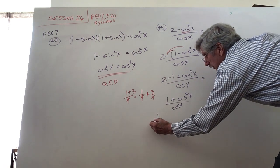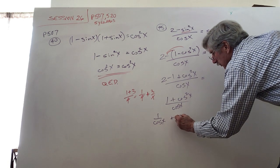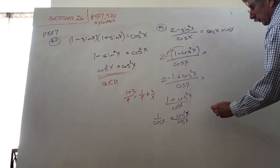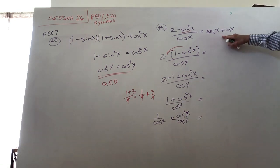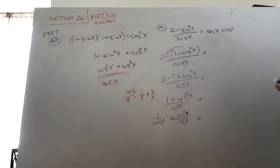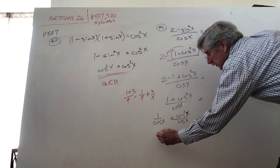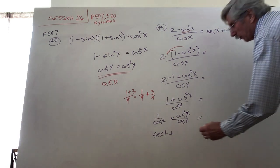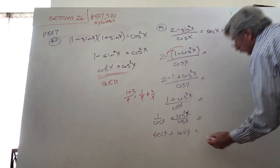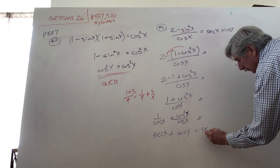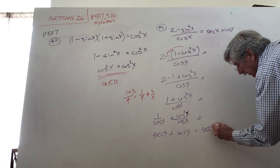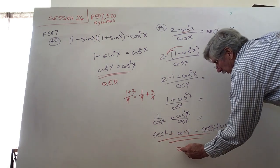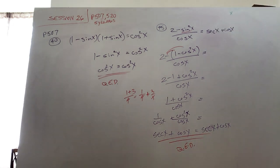So we have 1/cos x + cos²x/cos x. Since 1/cos x = sec x and cos²x/cos x = cos x, this gives sec x + cos x, which equals the right side. Identity verified — QED. We showed that one side was identical to the other.